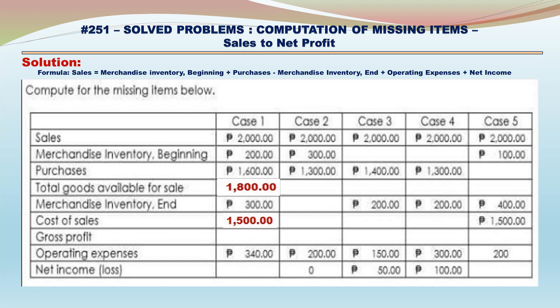Case 1: Cost of Sales is equal to 1,500. Total Goods Available for Sale 1,800 minus Ending Inventory 300 equals 1,500. Gross Profit equals 500 — Sales 2,000 minus Cost of Sales 1,500. Net Income equals 160 — Gross Profit 500 minus Operating Expenses 340.